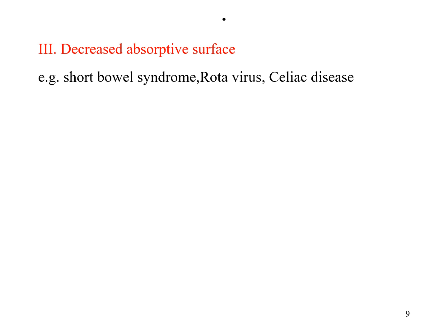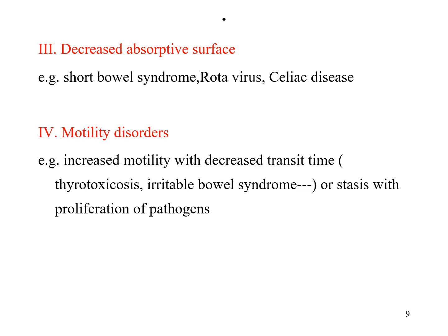Decreased absorptive surface may occur due to short bowel syndrome, rotavirus infection, and celiac disease. Motility disorder is due to increased motility with decreased transit time, or it may be due to stasis with proliferation of pathogens. Both increased motility and decreased motility can cause diarrhea.